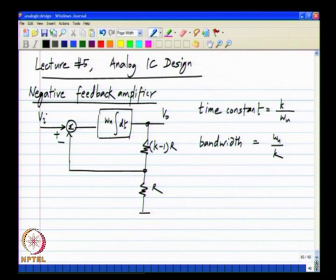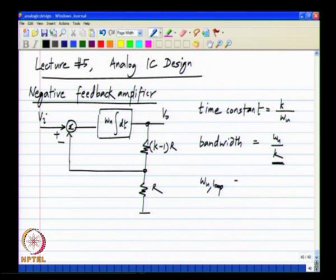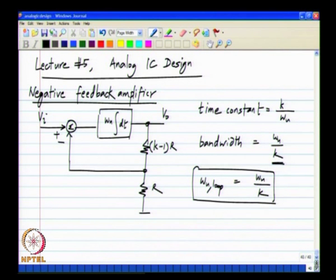We also investigated why this omega u by k comes about — that we did by trying to quantify the amount of negative feedback. What we evaluated was the loop gain and if you look at the loop gain, the unity loop gain frequency is omega u by k and that is why it turns out to be the bandwidth of the system. Below omega u by k you have significant negative feedback and above omega u by k you do not have significant negative feedback. These are the things that we have learnt so far.